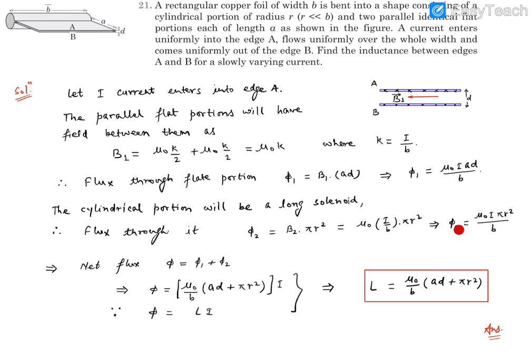So φ₂ turns out to be μ₀I times πr²/b. That's the flux linked with the cylindrical portion. Total flux linkage φ equals φ₁ plus φ₂.